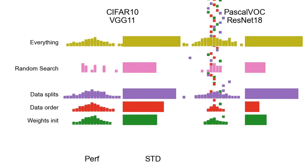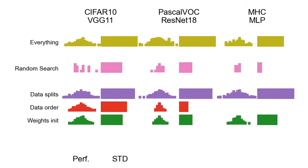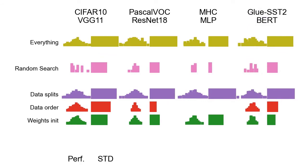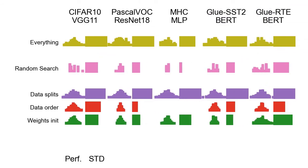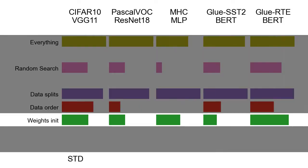Let's train ResNet-18 for segmentation on Pascal-VOC, a feed-forward neural network for protein-binding predictions on MHC, a BERT for sentiment analysis on GLUE-SST-2, and another BERT for textual entailment recognition on GLUE-RTE. Let's get rid of the histograms to focus on the standard deviation. First observation: weight initialization is not the most important source of variation.